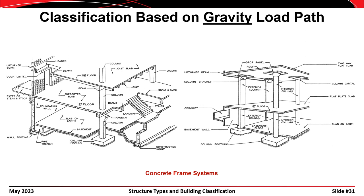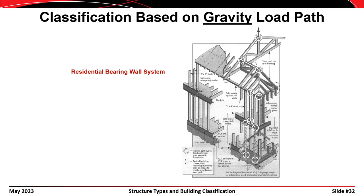Similar arrangements exist for concrete buildings. A waffle slab or one-way beam system and a flat slab system both carry the load from the floor into the columns and down into the foundation. A residential-type system carries the load from the roof or floors through the walls — unlike a solid bearing wall, this wall is made up of two-by-fours or two-by-sixes, and that light-frame framing carries the gravity loads into the foundation.